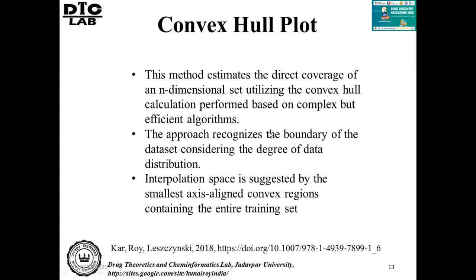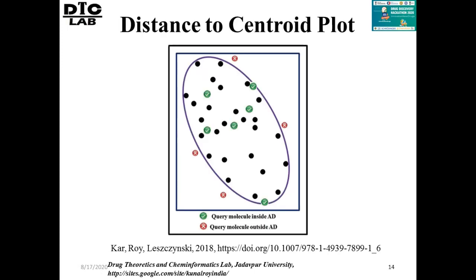Next is the distance to centroid method. The centroid may be considered as a grand mean based on the descriptor values of the training set data. You consider the distance of a particular test compound from the centroid — if it is too far, it is outside the domain. This is shown by an ellipse: compounds outside the ellipse are outside the domain, and compounds inside the ellipse are within the domain. The ellipsoidal region is centered on the dataset grand mean, with its principal axes based on the eigenvectors of the dataset variance-covariance matrix.